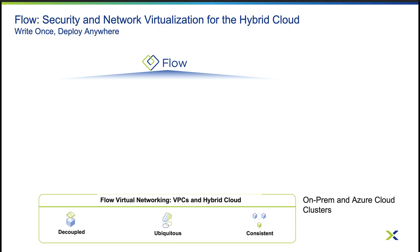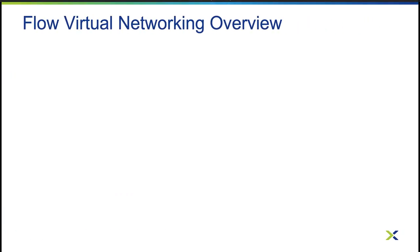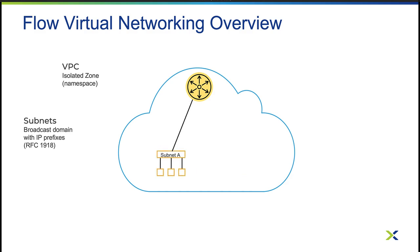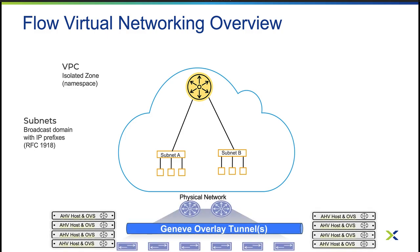Some of the common questions we get around Flow Virtual Networking are: what's an overlay network, and what features does Flow Virtual Networking offer? The basic unit of Flow Virtual Networking is the VPC, or Virtual Private Cloud. This VPC is an isolated network namespace containing user-defined subnets in any address range, and a virtual router bringing these all together. A VPC can have a single subnet or multiple subnets. Since we can define these subnets any way we like, we need a way to stop them from conflicting with each other and with the physical networks.